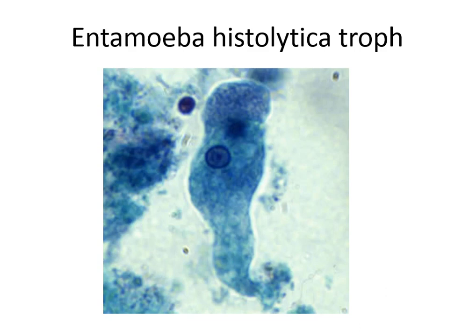What's unique to Entamoeba histolytica is that it can make flask-shaped ulcers in the colon. It can also move to the lungs and go to the liver. There are no exam questions pertaining to treatment, but it's good to know because you will get calls about it in practice.